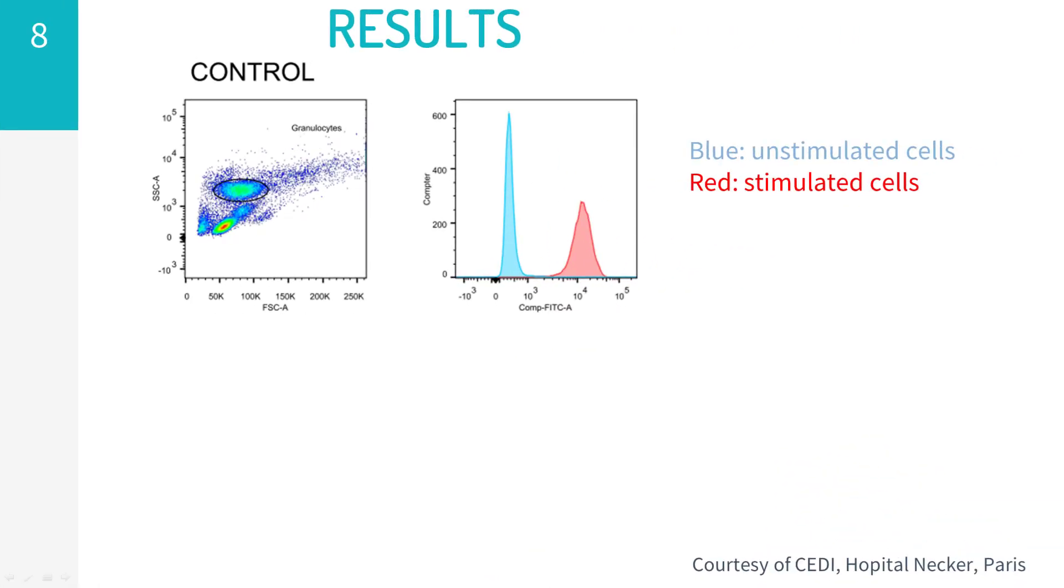Here are the results of a normal control test. You will appreciate an oval gate has been placed around the neutrophils for analysis. You can see that stimulated cells, in red, have a much higher fluorescence than unstimulated cells, which have a blue histogram and can be clearly distinguished.